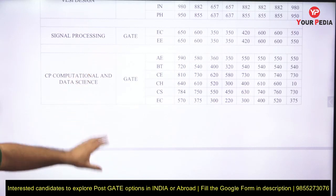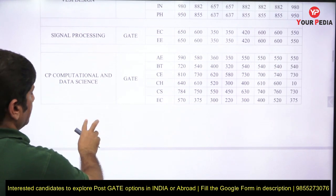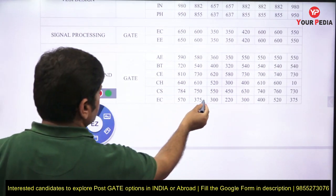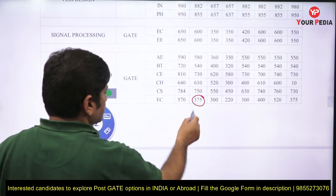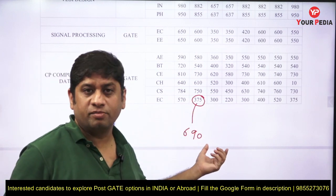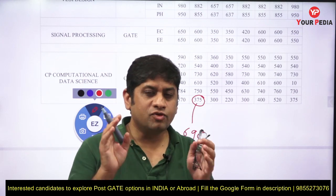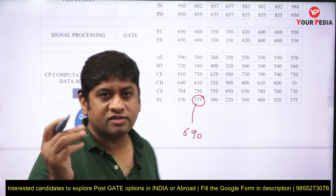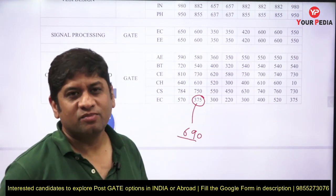Let's look at Computational Data Science, which is supposed to be the most sought-after course. See this carefully — for a candidate who appeared with Electronics paper, last year the cutoff was 690. This year, instead of going down to, say, 650 or 600 as one might expect, it actually came in at 675.